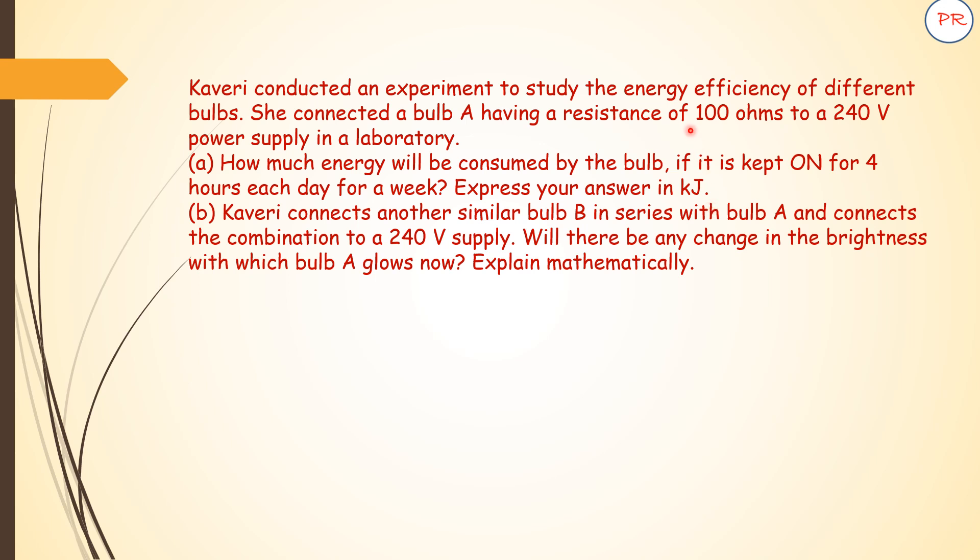So let us know what is given. What is given to us? There is a resistance of 100 ohms and voltage is 240 volts. And what you have to calculate? How much energy is consumed by the bulb? It is kept on for 4 hours each day for a week. So 7 days are there. You have to express it in kilojoules.